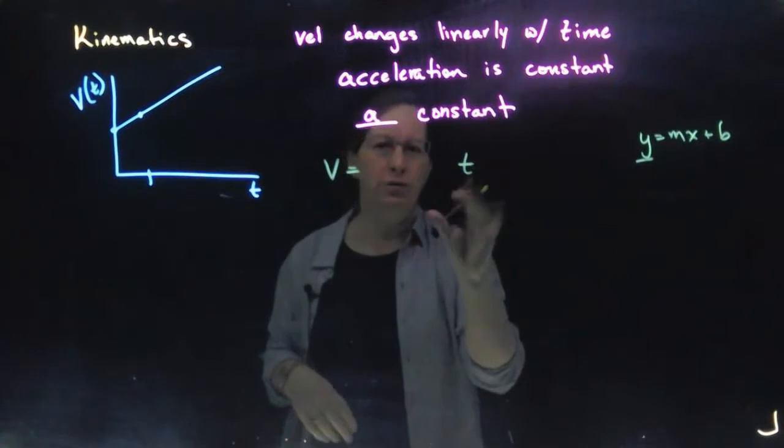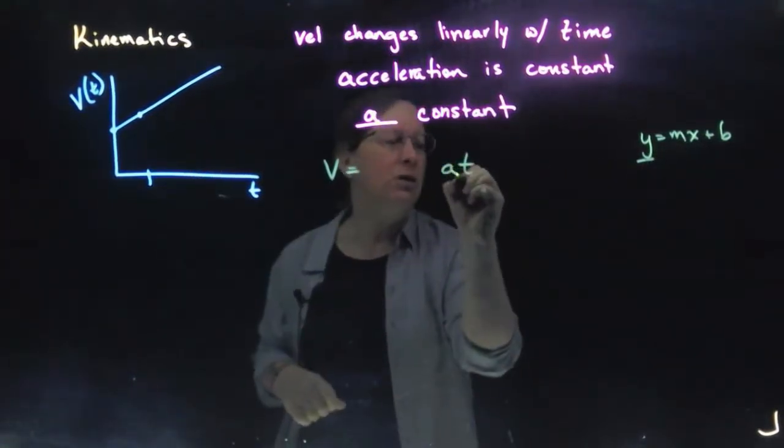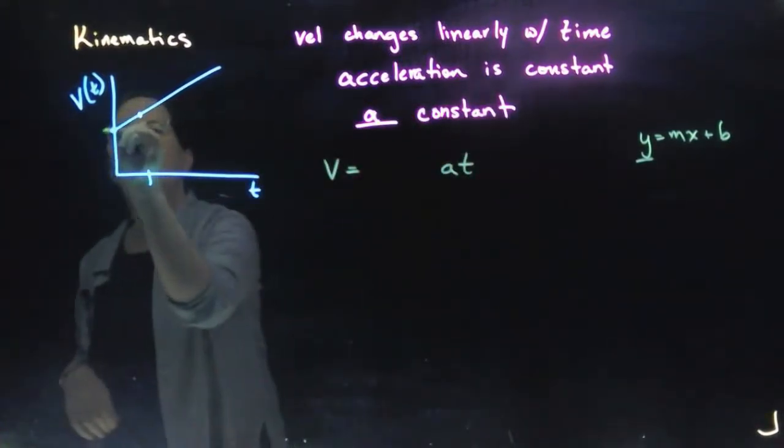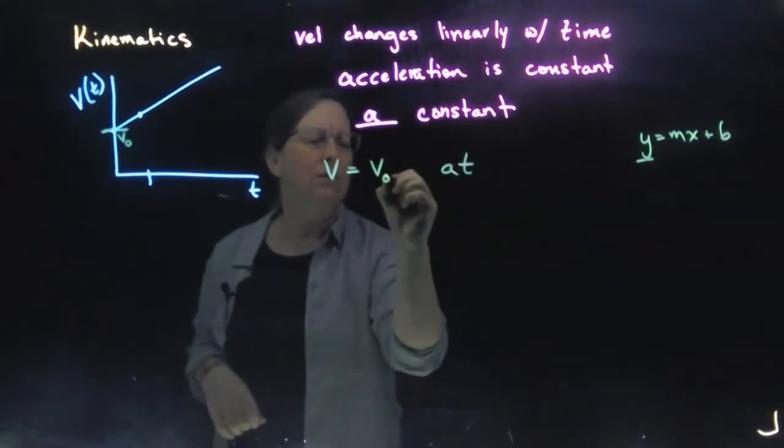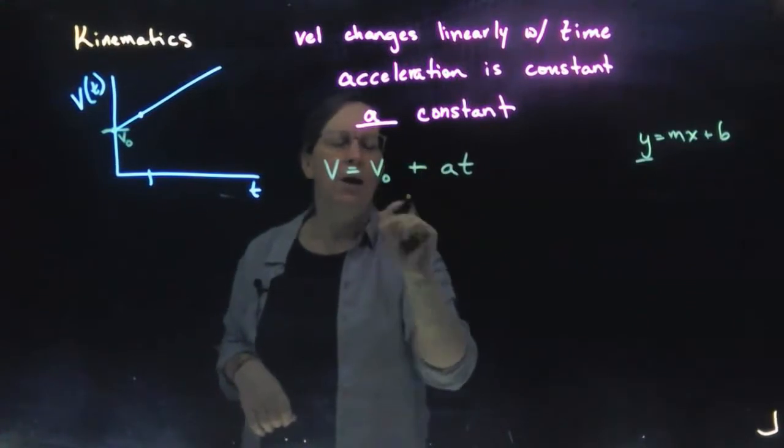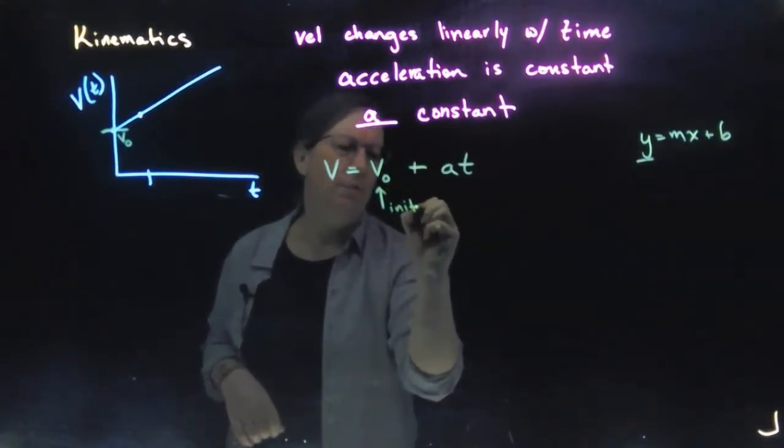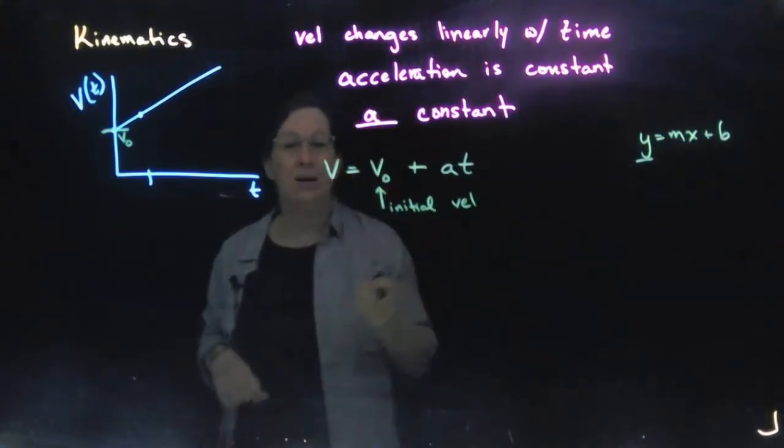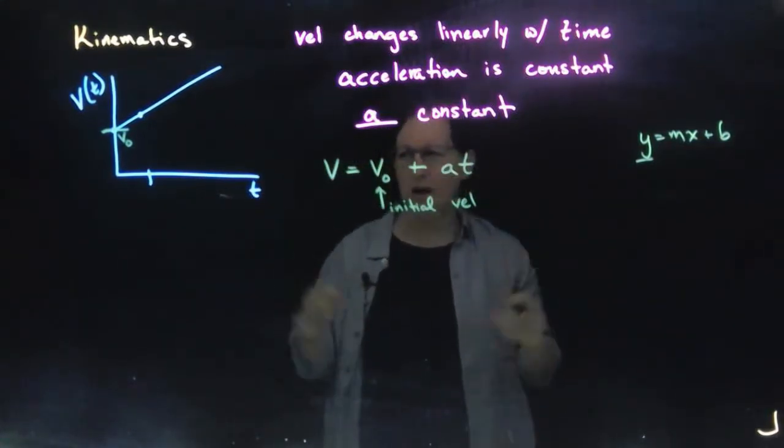So I'm going to write it just a little differently so it'll match your book. Your slope is your acceleration. And b is your y-intercept. That's this point right here. And we call that v sub zero or v naught. And this is our initial velocity. The velocity at time t equals zero.